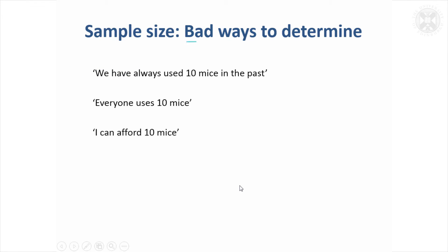Thinking about what I would say were bad ways to determine sample size — but nevertheless it's still something that people say to me a lot. They've always used this number of mice in the past, that's what they're going to do again. They've got a lot of significant results, so this number of mice can give the result that they want, so why shouldn't they do that again? You're sort of challenged to try and justify why you should suit the number of animals to the particular experiment. Another argument is everyone uses this number, or I can only afford this number — we've got practical restraints on the experiment so that's all we can do. These are not really good ways to determine your sample size.